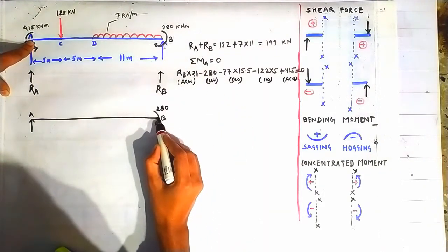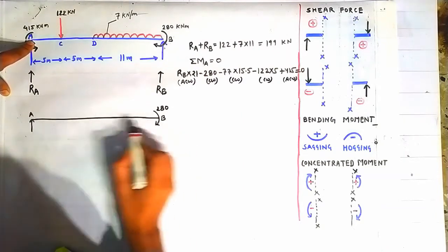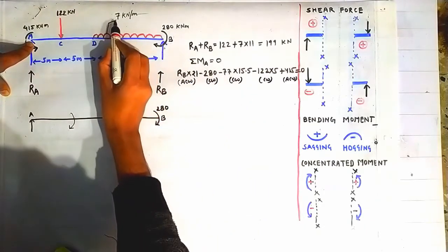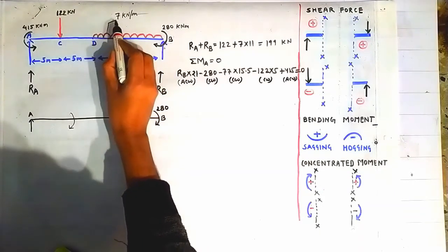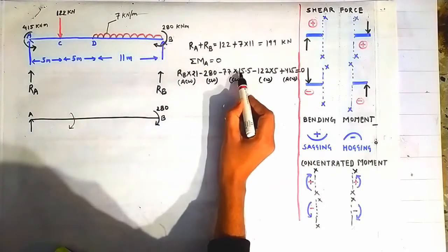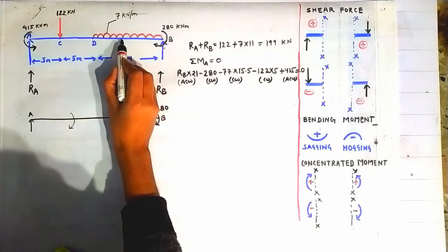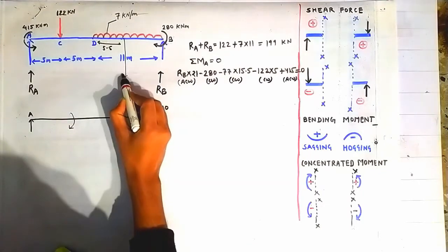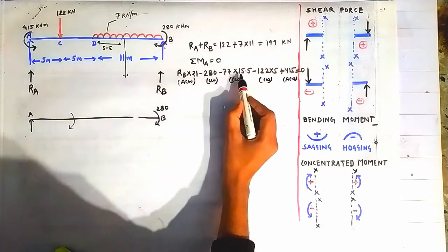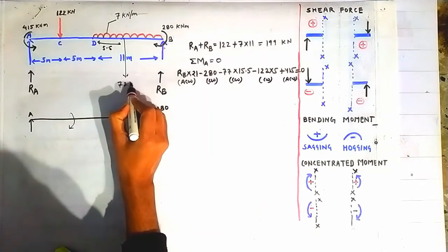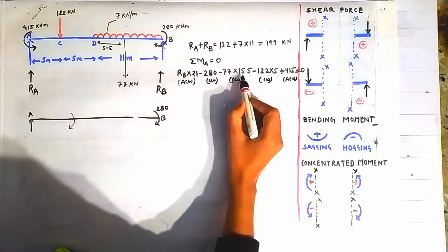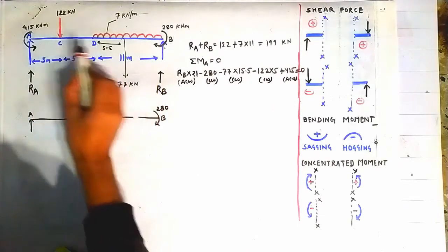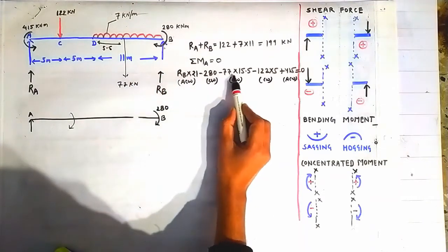The moment of 280 acting at point B rotates beam AB in the anticlockwise direction about point A. The moment of the UDL having intensity 7 over length 11 gives a load of 77 kN, acting at a distance of 5.5 m from its start, that is at the middle. So it creates a moment of 77 × (5 + 5 + 5.5) = 77 × 15.5, which also rotates the beam in the clockwise direction about point A — taken as negative.